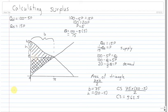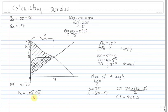We calculate producer surplus much the same way — again with the area of a triangle: base times height divided by 2. We can use the same base of 75. And since the supply curve starts at 0, we know the height is simply 5. So the area is 75 times 5 divided by 2, giving us a producer surplus of 187.5.